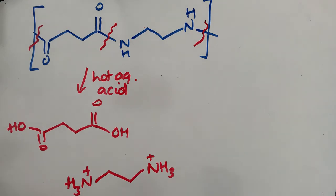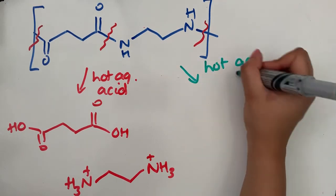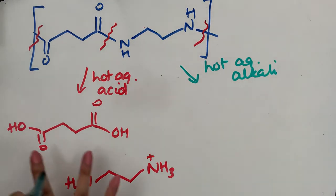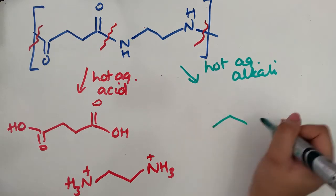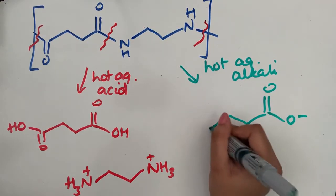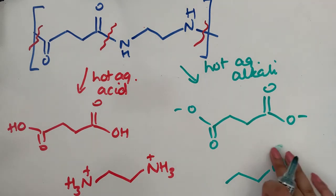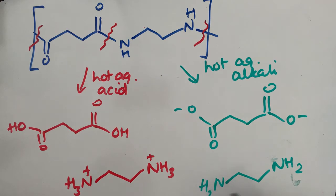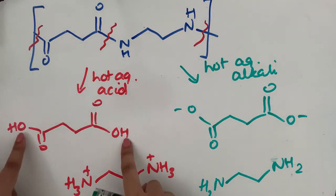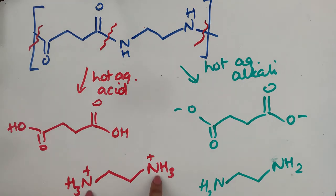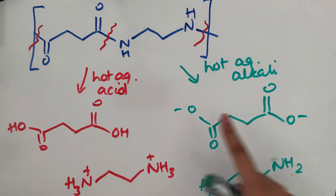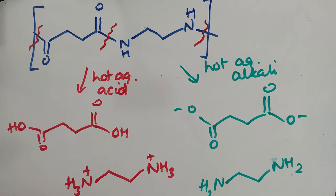Let's now do the alkaline hydrolysis — hot aqueous alkali. Rather than forming the dicarboxylic acid, you actually form the dicarboxylate ion, deprotonated at both ends. And the diamine is just going to be a diamine — NH₂ at either end — as opposed to the diammonium. So it's important to remember: under aqueous acid conditions everything is protonated — you have your hydrogens on your carboxylic acids and extra hydrogens on your amine. Under alkaline conditions, everything is deprotonated — your carboxylic acid becomes a carboxylate and your ammonium becomes an amine.